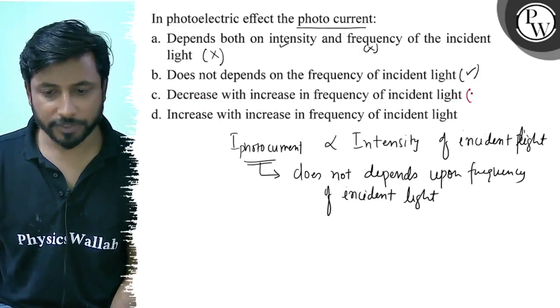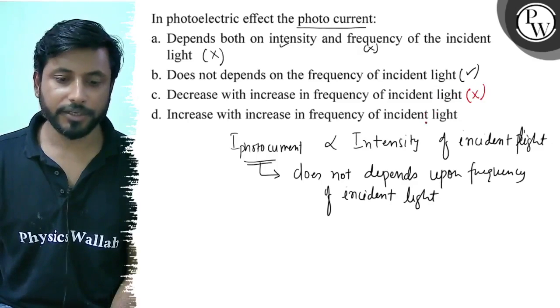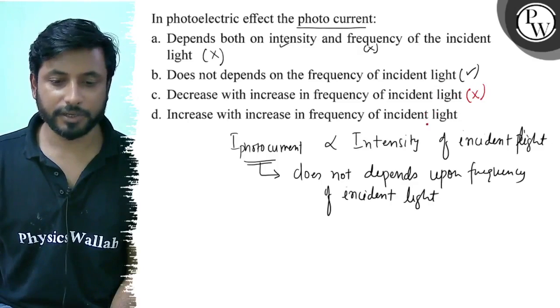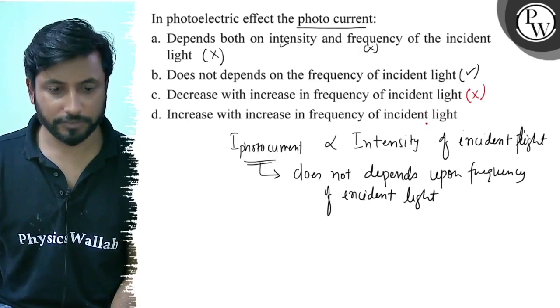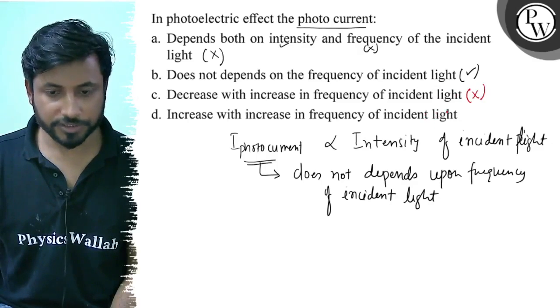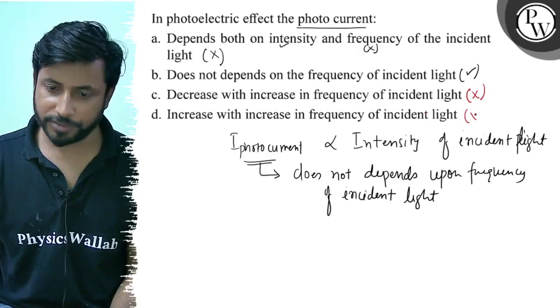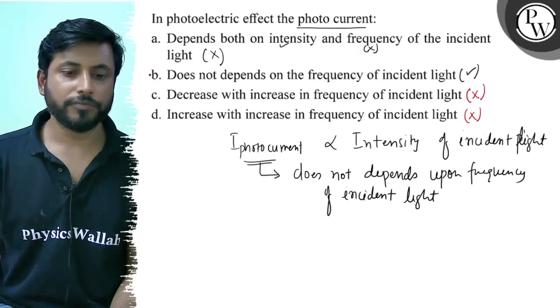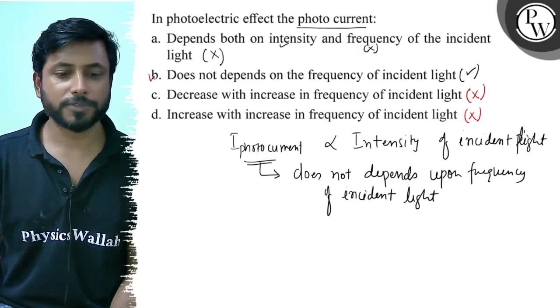Option D says photo current increases with increase in frequency — frequency pe dependent nahi karta. So the final answer is Option B.